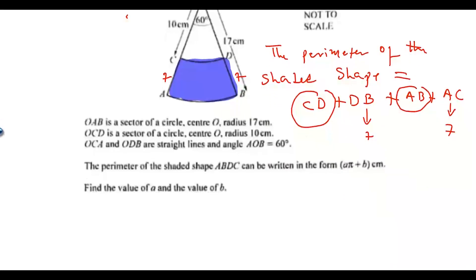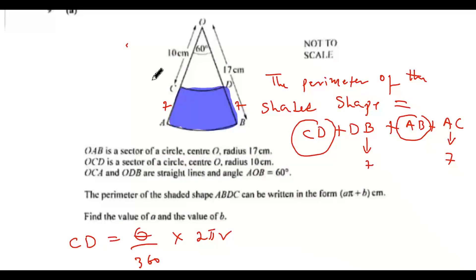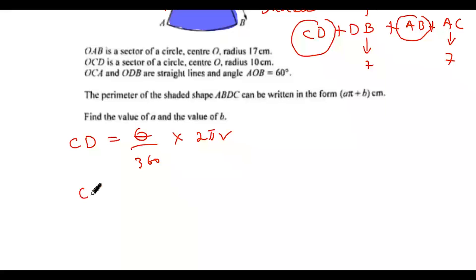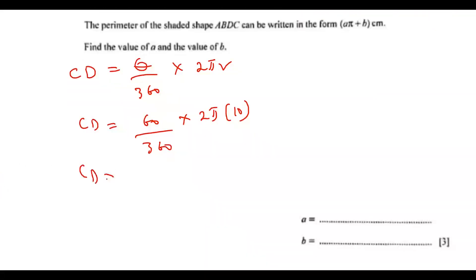Let's find CD. CD equals theta over 360 degrees times 2 pi times R, where R equals 10 cm and theta equals 60 degrees. If you input all of this into your calculator, you should get 3.33 pi.